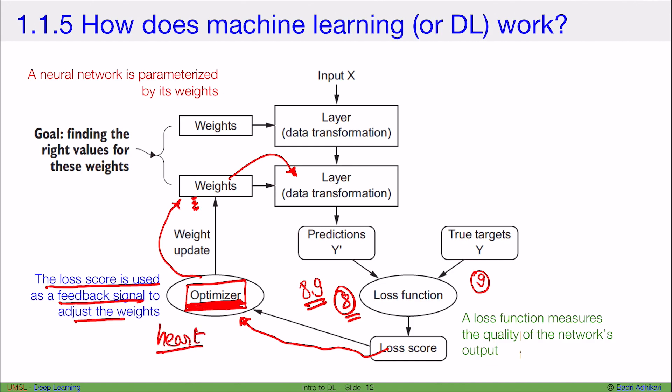And this optimizer is actually the heart of this algorithm. It is the heart of the algorithm that takes the loss score and updates the weights so that in the next round, the weights are more relevant to get a more accurate estimate, y dash or a better y dash next time.